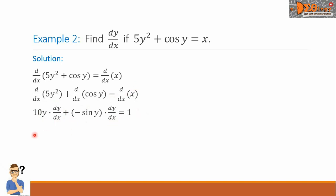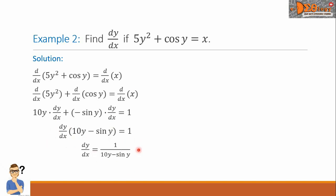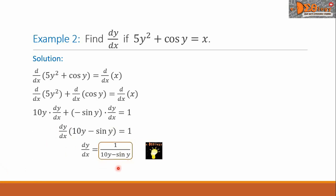On the left side, we can factor out dy over dx. So the left side becomes dy over dx times the quantity (10y minus sine y) equals 1. Dividing the equation by this quantity, we get the final answer: dy over dx equals 1 over the quantity (10y minus sine y). This is our final answer.